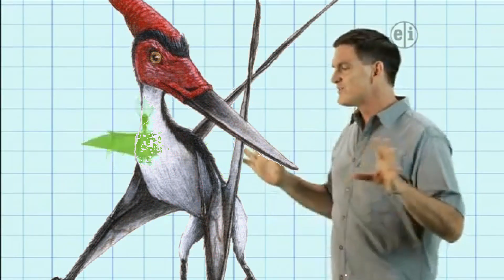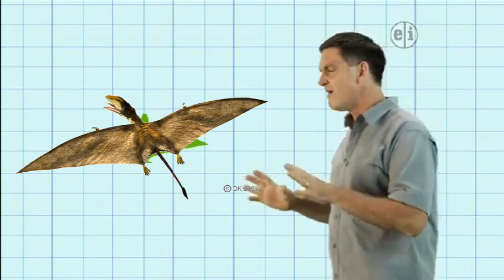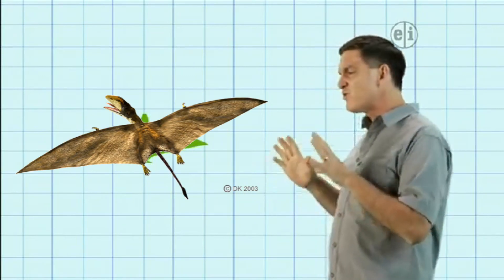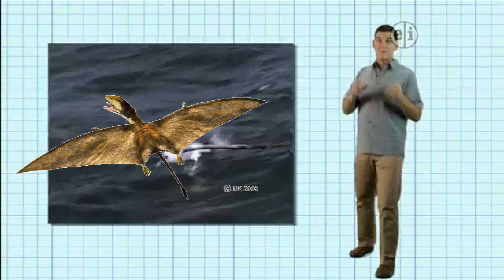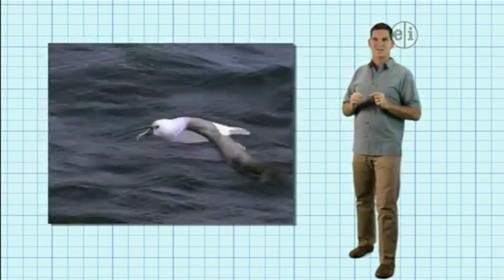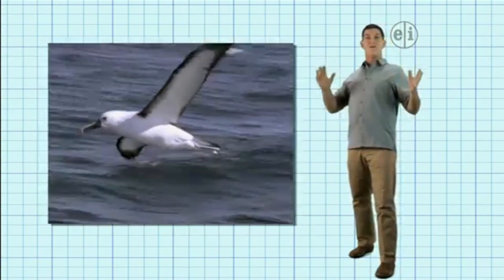Pterosaurs came in all different sizes. Pettinosaurus was small. Its wingspan was only about 24 inches. The biggest bird today is the wandering albatross, with a wingspan of up to 12 feet.